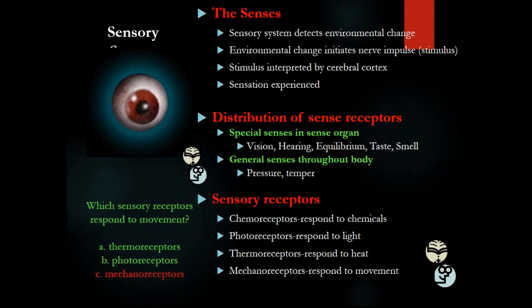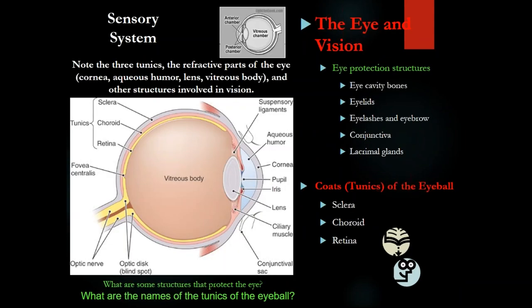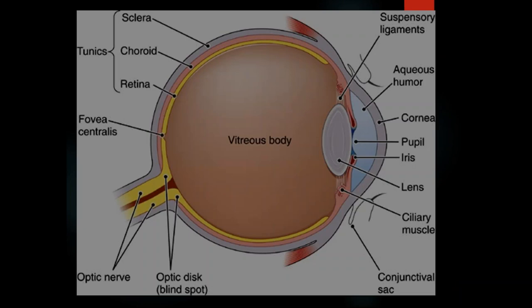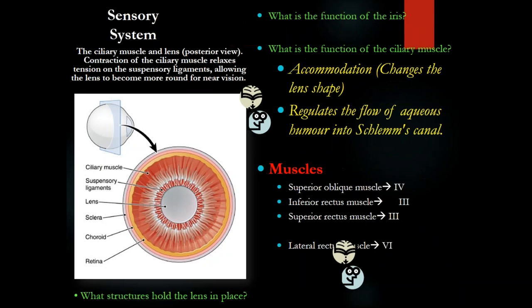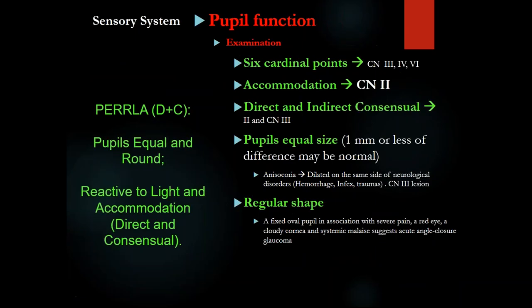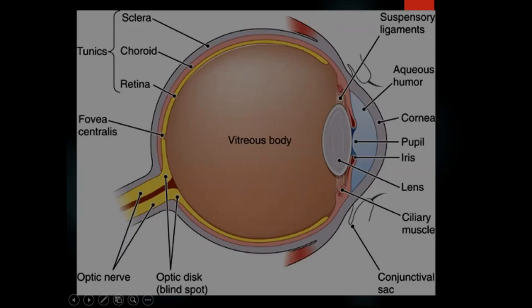Talking about the senses — remember the three chambers of the eye, the three layers, where the aqueous humor is, and who produces it. The aqueous humor is produced by the ciliary body. The ciliary body is a complex composed of ciliary muscles, ciliary vessels, and ciliary glands. The ciliary glands produce the aqueous humor, which travels through the anterior and posterior chambers.